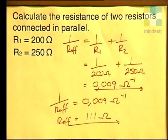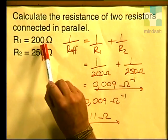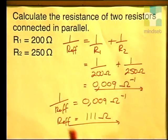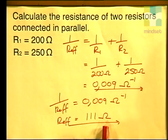Let's take a careful look at the value we have just obtained. We know that the two resistors have values of 200 ohms and 250 ohms, and that the effective resistance is 111 ohms. This shows us that connecting resistors in parallel reduces the effective resistance on the circuit, and therefore it will increase the current in the circuit. This is a very important characteristic of parallel circuits.